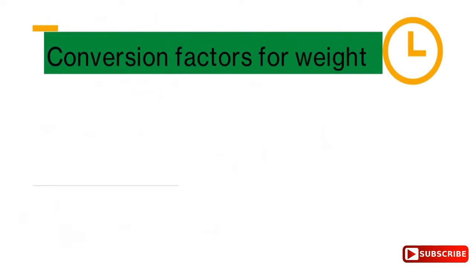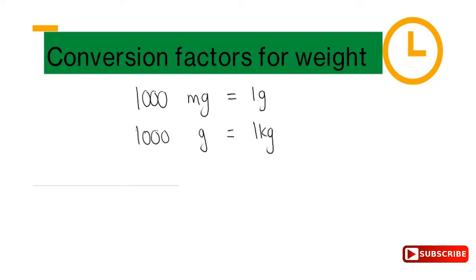Now the conversion factors for weight: 1000 milligrams equals 1 gram; 1000 grams equals 1 kilogram; and 1000 kilograms equals 1 ton. Memorize these for when you work with weight conversions.